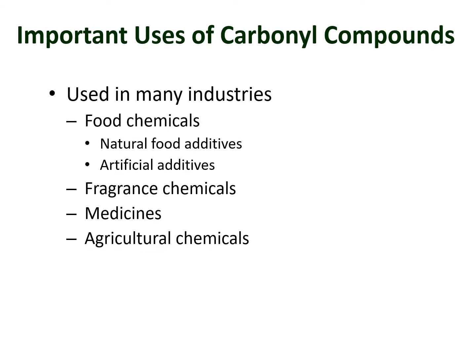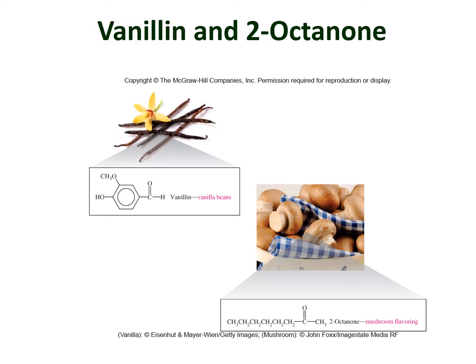Carbonyl compounds are used in many industries. The food industry uses aldehydes and ketones as natural or artificial food additives. They are also found in fragrance chemicals and perfumes, used in making medicines, and used in agricultural chemicals to preserve crops. Two common food industry examples are vanillin and 2-octanone.